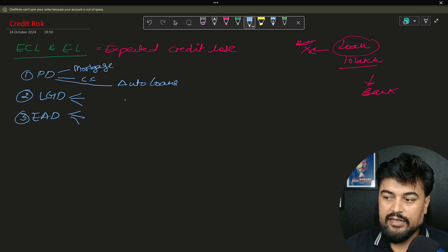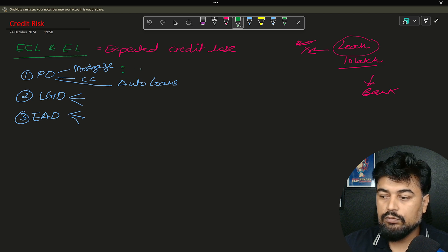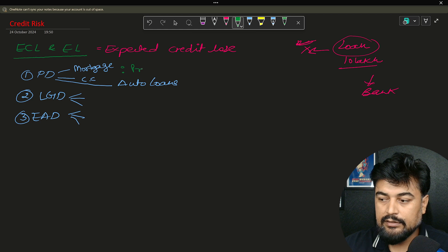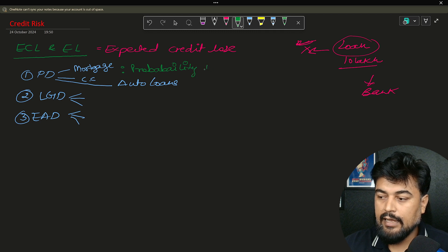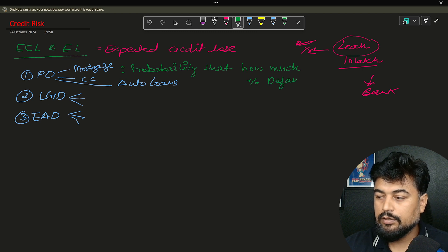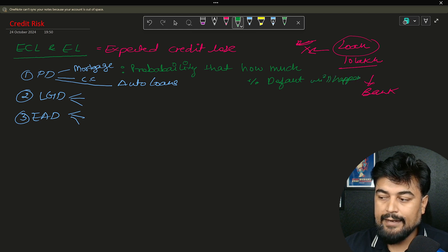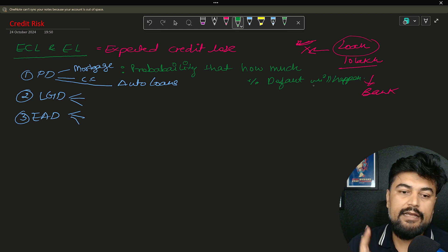Now there is a question that comes: how do we define probability of default? So as the name says, the probability that how much percent default will happen. So that is known as probability of default.